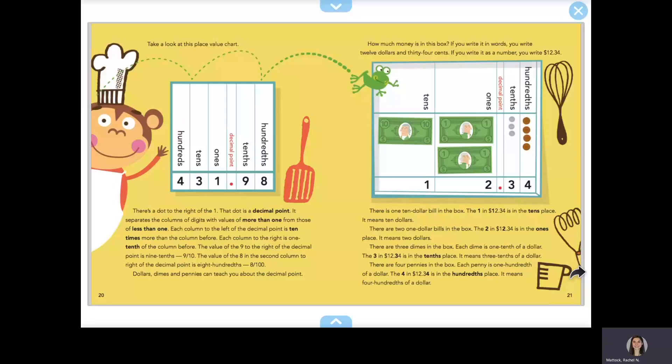Take a look at this place value chart. There's a dot to the right of the one. The dot is a decimal point. It separates the columns of digits with values of more than one from those of less than one. Each column to the left of the decimal point is 10 times more than the column before. Each column to the right is one tenth of the column before.